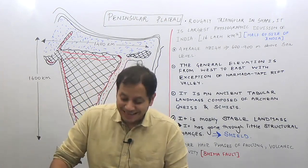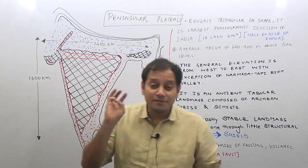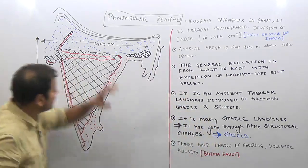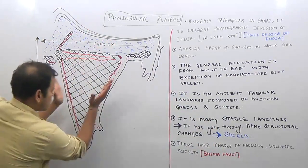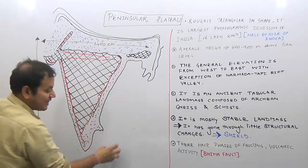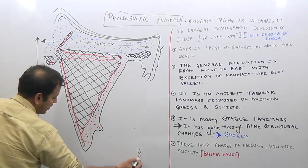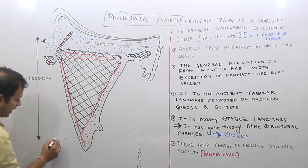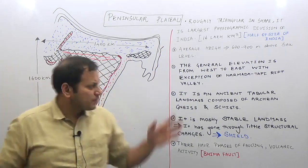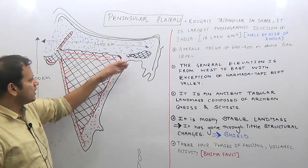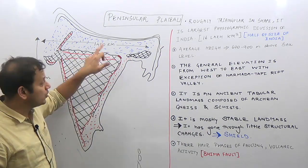Let us study the next topic: the peninsular plateau. The physiographic divisions of India are the Himalayas, the great plains, the peninsular plateau, the coastal plains of India, and the island regions — that is, the Andaman and Nicobar Islands and the Lakshadweep Island regions, as well as some islands in the Narmada-Tapi Delta and the Ganga-Brahmaputra Delta.